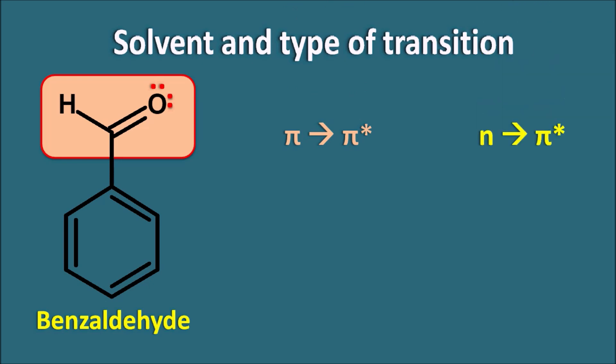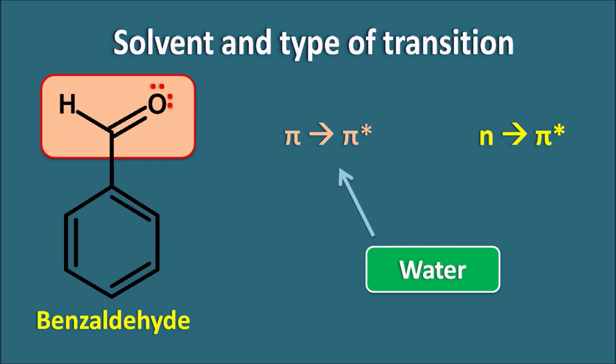But what is the effect of a solvent like water on these two types of transitions? Whether the water is going to promote the pi to pi* transition, the n to pi* transition, or both? This is what we call solvatochromism — solvatochromism is the effect of the solvent on the absorption maxima of a particular transition.